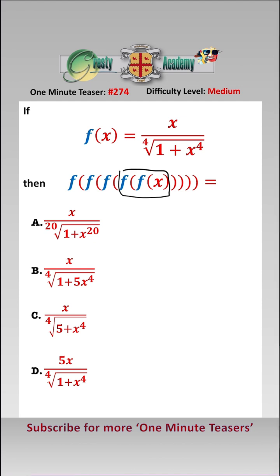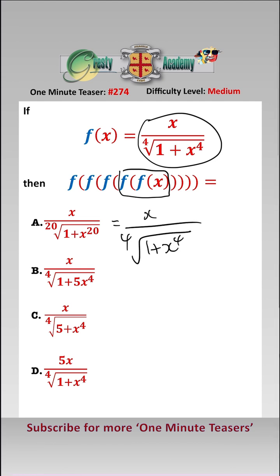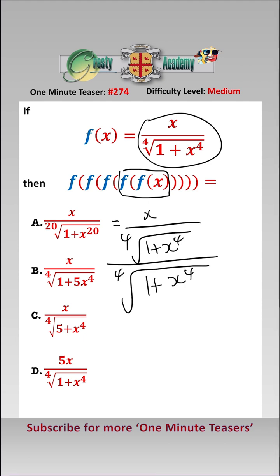So let's have a look at f of f of x. We replace x by this, so therefore that gives us x over the fourth root of 1 add x to the 4, over the fourth root of 1 add x to the 4, over the fourth root of 1 add x to the 4, to the power of 4. Now this cancels with this.